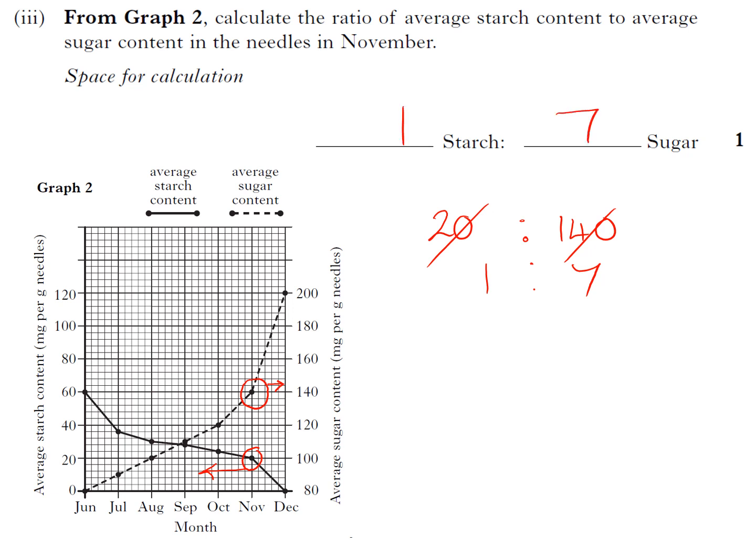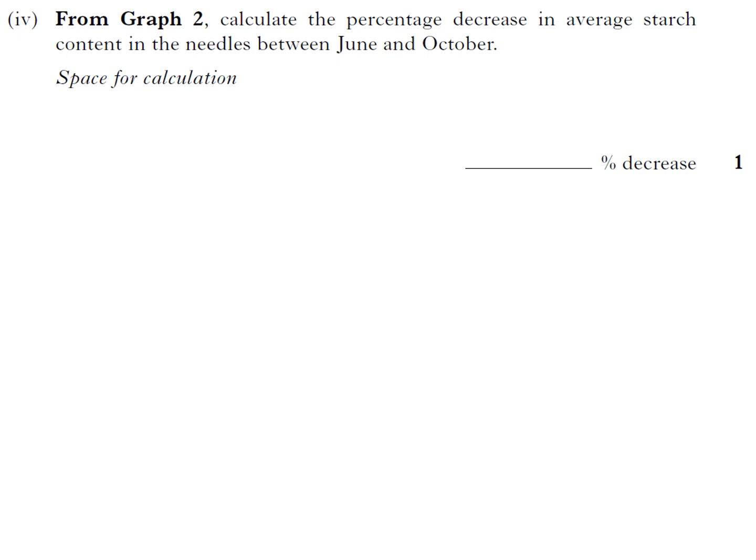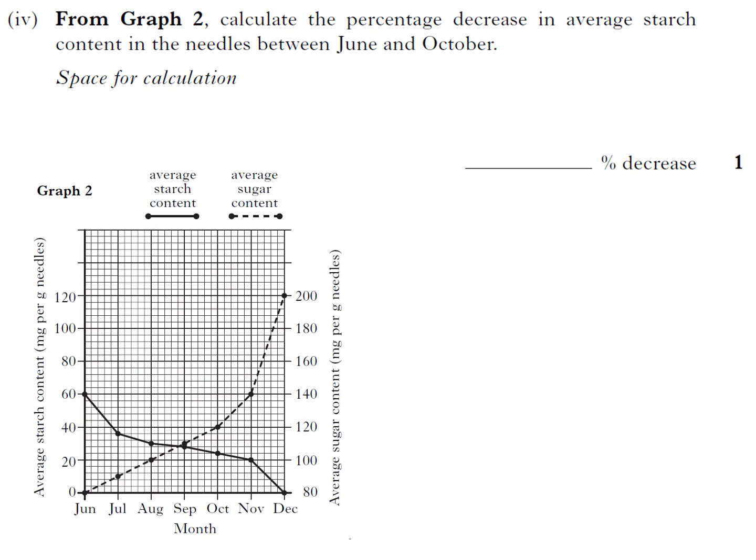Percentage decrease in average starch content in the needles between June and October. So starch content, remember this is just this line and only reading this way. I am looking for June starch, so June starch was 60, and October starch was 24.